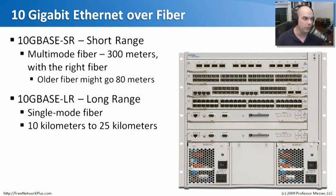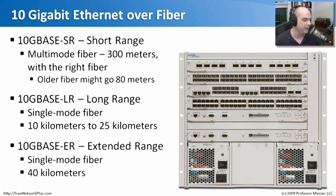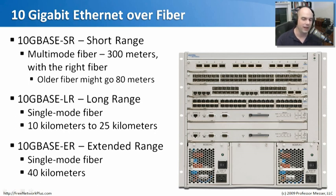There is a long range standard for 10 gig fiber called 10GBase-LR, which uses single mode fiber and can go from 10 kilometers all the way to 25 kilometers. There's also an extended range standard, 10GBase-ER, using single mode fiber, with the technology going all the way to 40 kilometers. Usually this type and speed of Gigabit Ethernet connectivity runs through switches and routers designed to run at those speeds, not connecting to end stations.